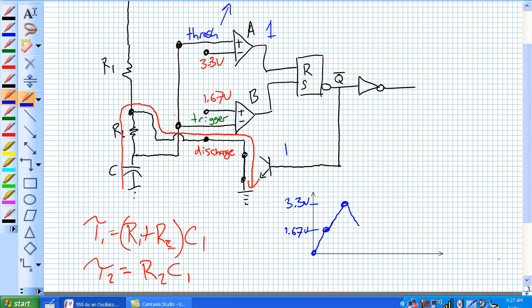Once it discharges below 3.3 volts, what happens here, comparator A outputs a 0, but since we are already in a reset condition, and we've got 0, 0 here, nothing's going to change. The discharge transistor is still going to be on until it falls down to 1.67 volts. What happens there?